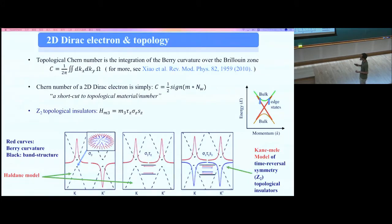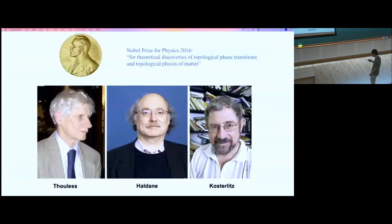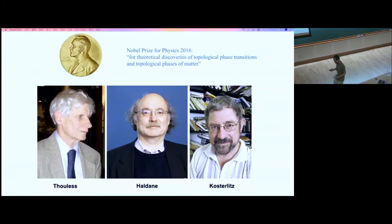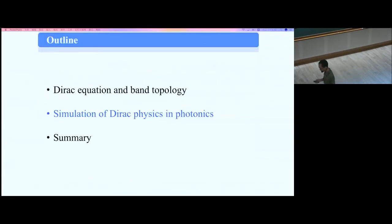Because of spin-orbit coupling and time-reversal symmetry, the mass is opposite for spin-up and spin-down. For spin-up you have Chern number +1 and for spin-down Chern number -1. This means on the edge, spin-up propagates left-to-right while spin-down propagates right-to-left. These are the basic elements of topology and Dirac physics, which is now related to a Nobel Prize in Physics.